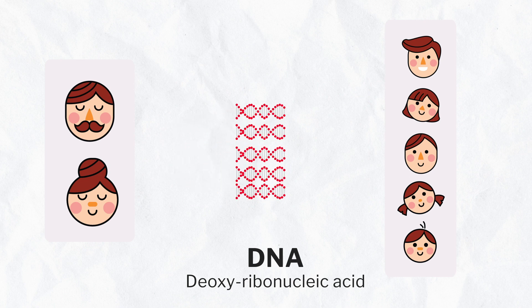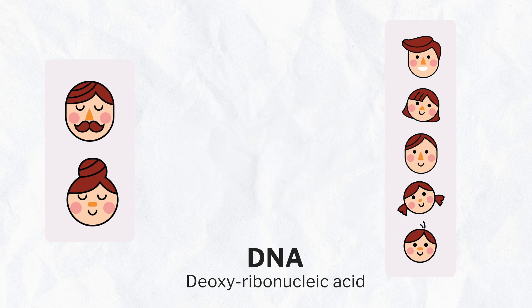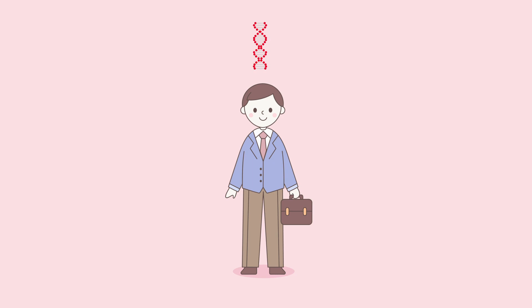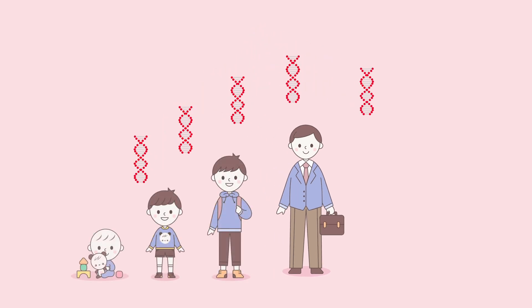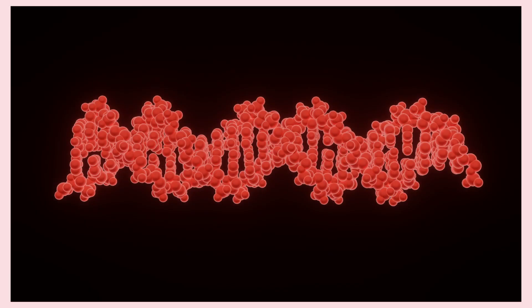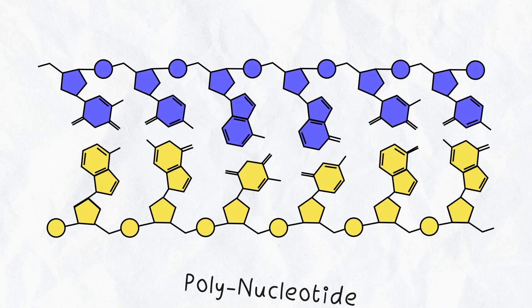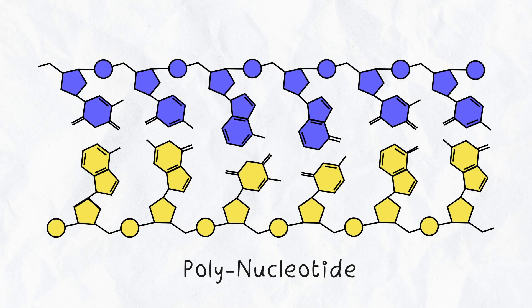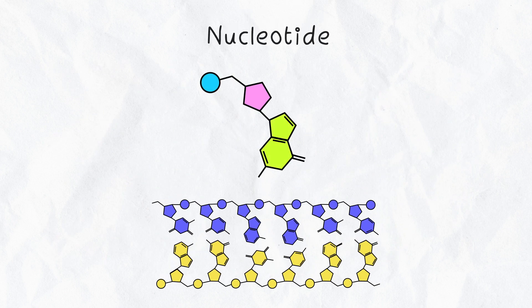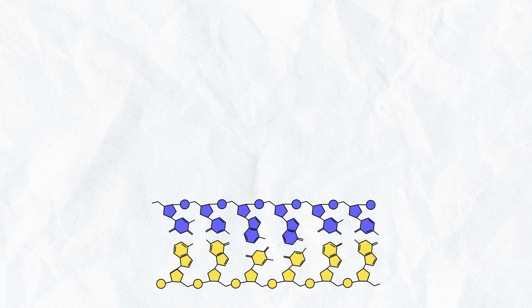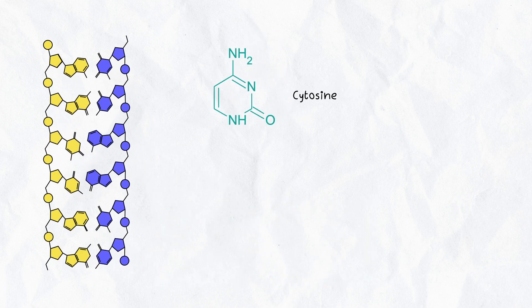A person has the same DNA all over their body and throughout their life. DNA is composed of two chains that form a double helix by coiling around each other. It is also called a polynucleotide, as it is composed of many monomer units called nucleotides. Each nucleotide is a combination of one base, a sugar, and a phosphate group.